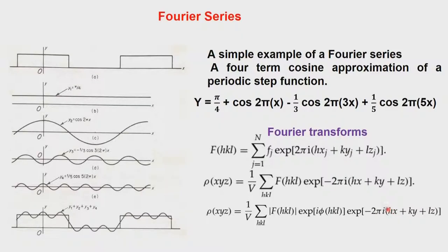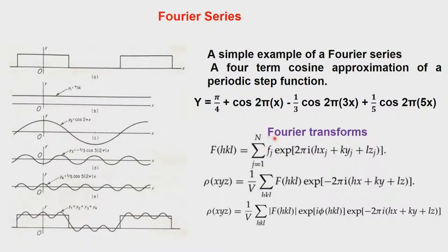Once we have the phase, we can use the electron density expression to calculate the electron density distribution, which tells us the positions of the atoms inside the unit cell. The summation is over the unit cell and within it we get information of where the atoms are sitting. Since F depends on Fj, the nature of the atom will also be shown — we will know whether it is carbon, nitrogen, or oxygen depending on the value we associate with Fj. So we have to think of a methodology by which we can solve the phase — the so-called solution to the phase problem.